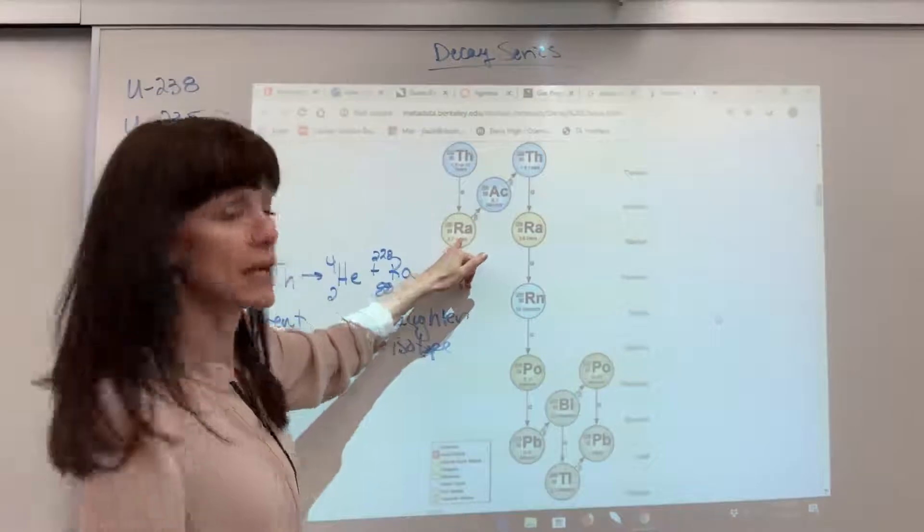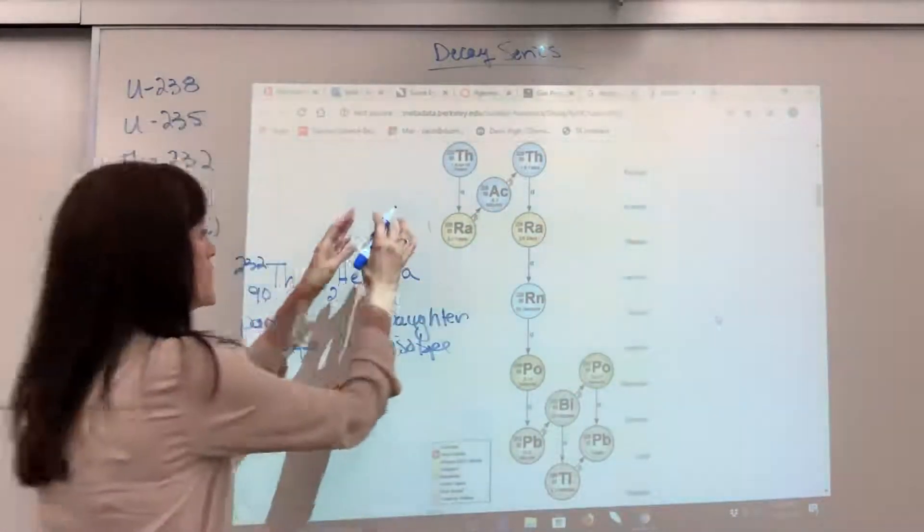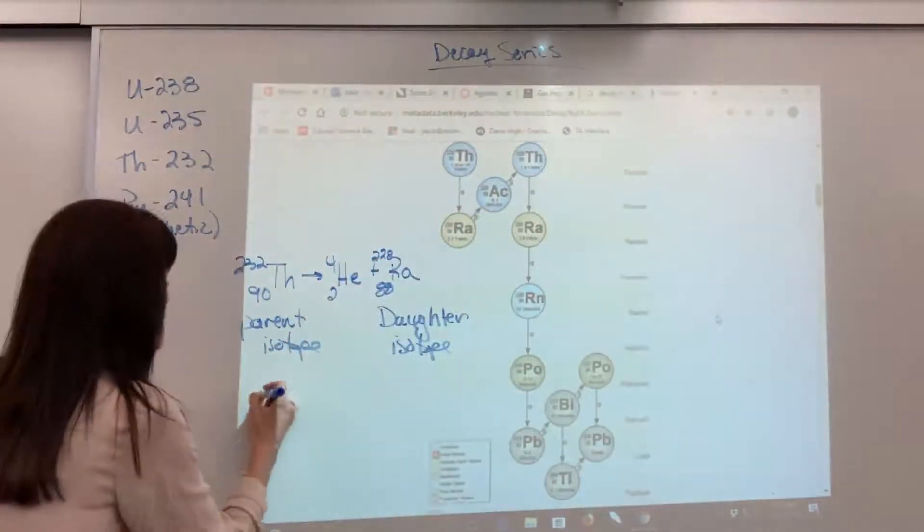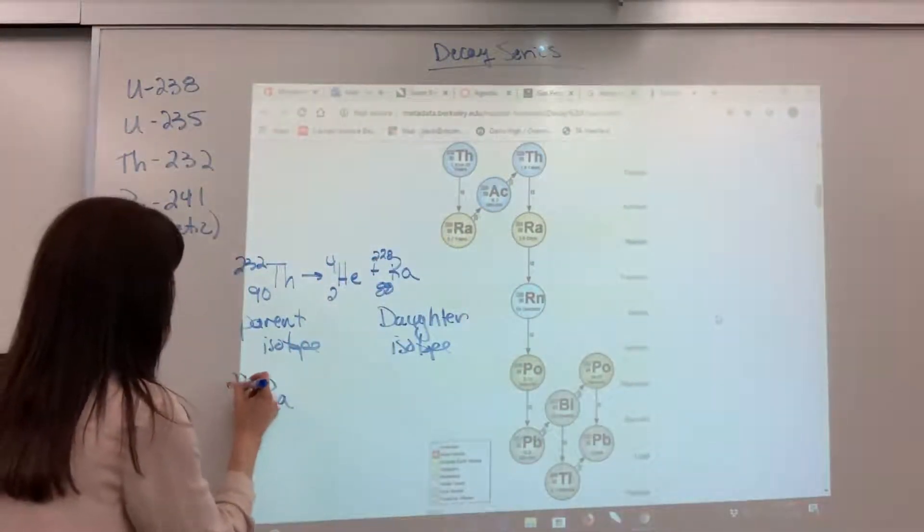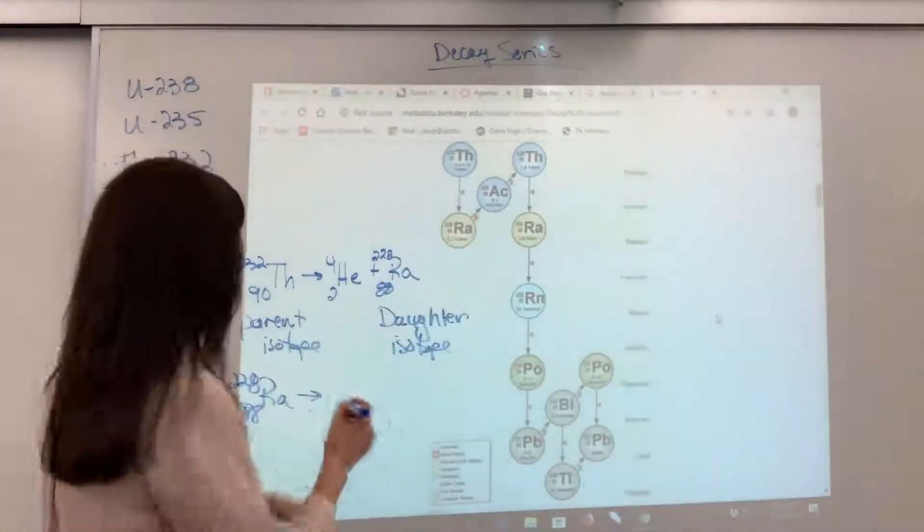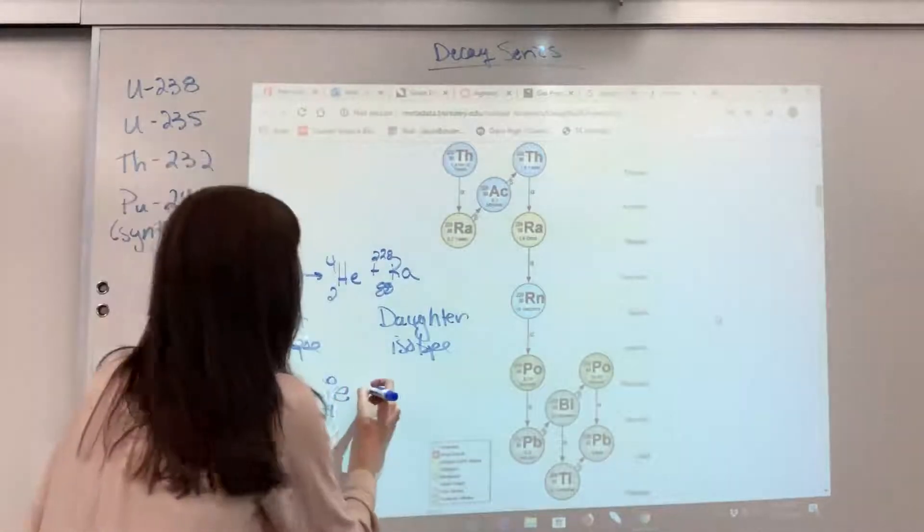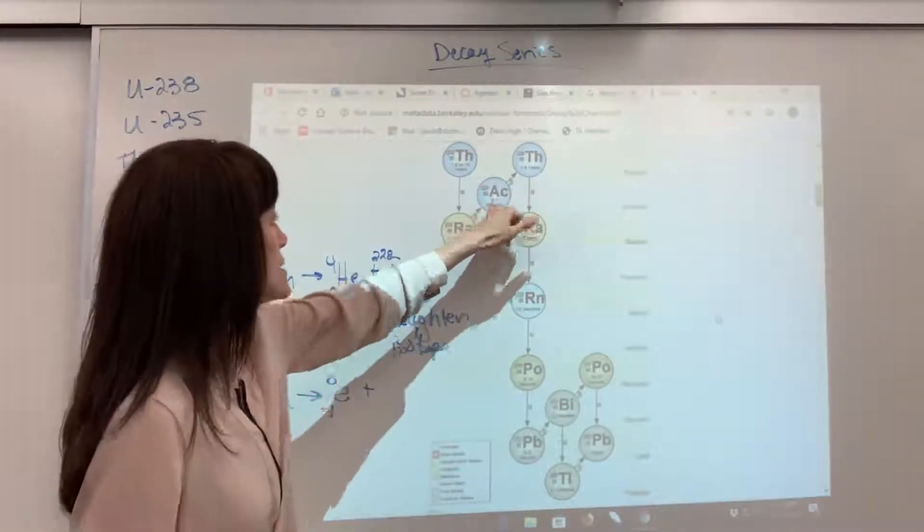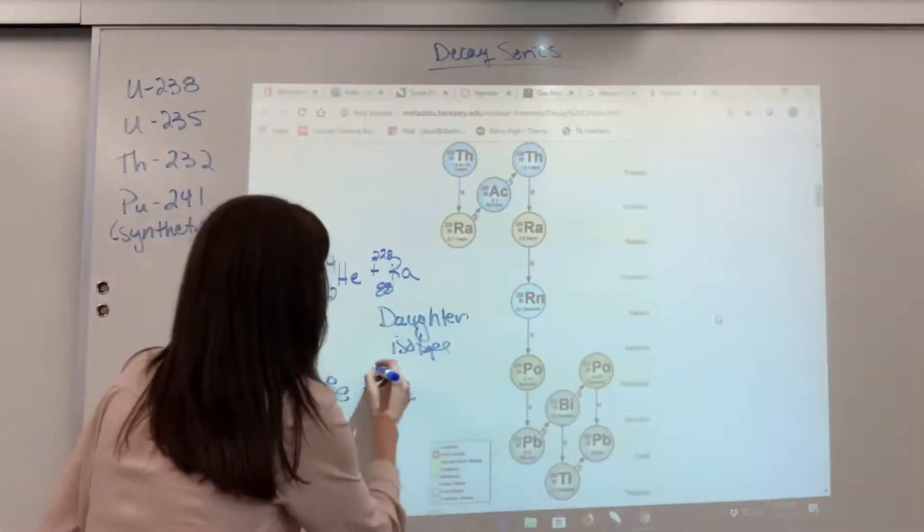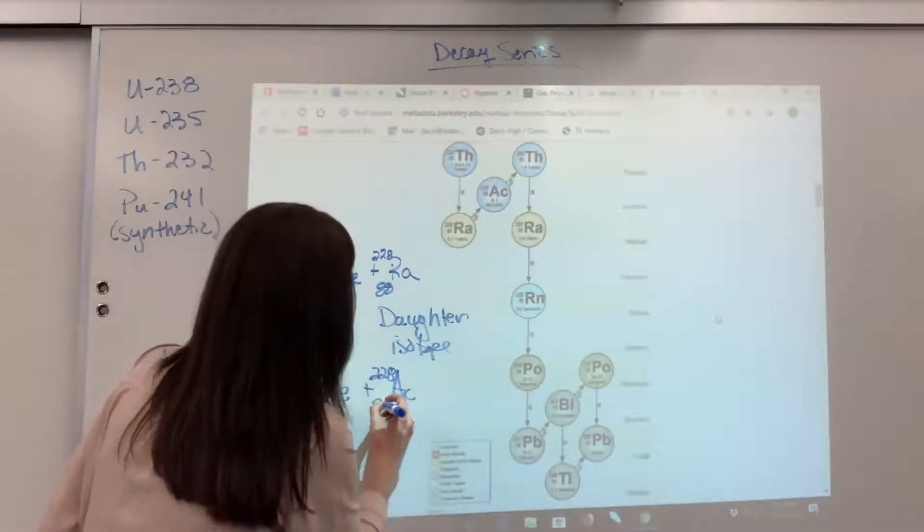The radium is going to undergo a beta decay. So let's write that down. So now the radium becomes the parent isotope. Here's my radium-228, and it is going to undergo a beta decay. Remember that's just our high-speed electron. And that will produce an actinium-228 with 89.